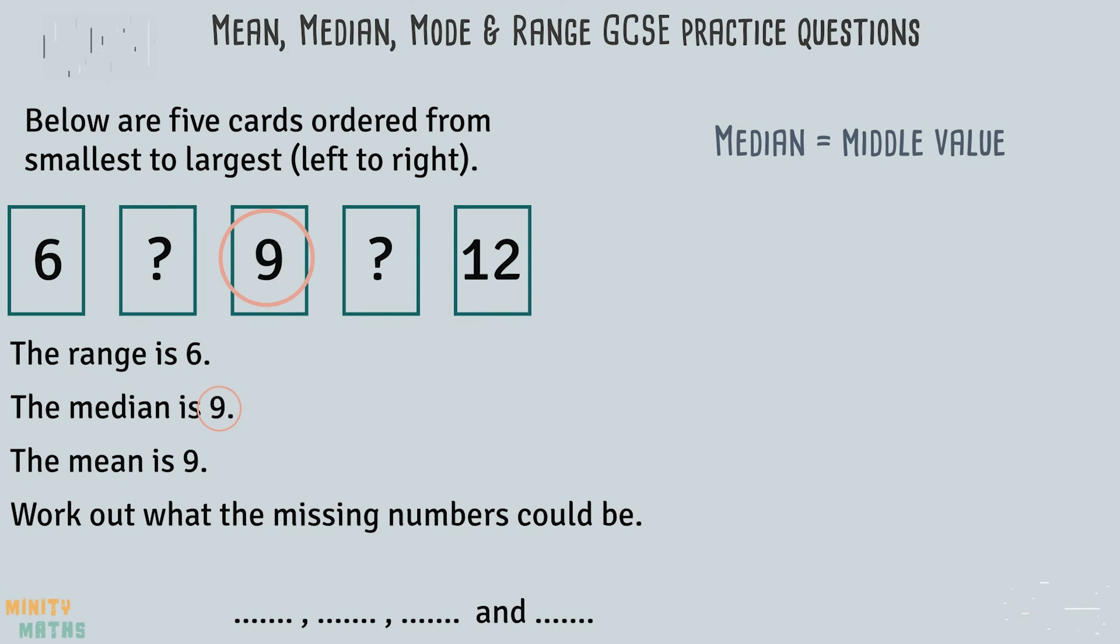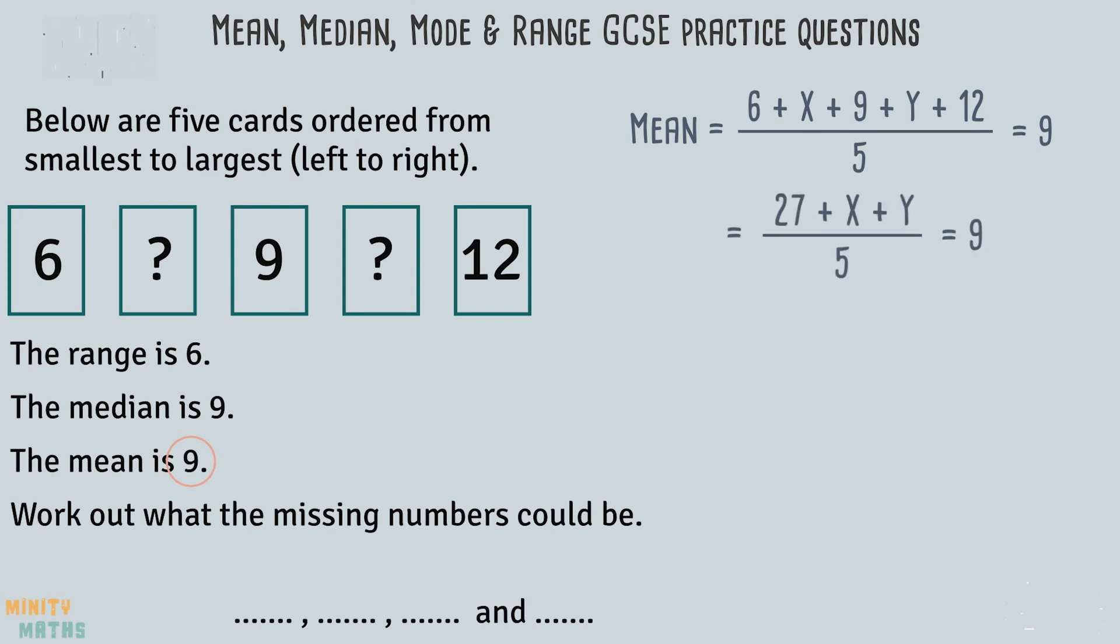We are now left with only two unknown values. Finally, we are told that the mean of the five cards is 9. Let's write this out using the formula for finding the mean. We can use the letters x and y to represent the two unknown values. Let's simplify and then rearrange this equation so we can work backwards to find the missing numbers. We can simplify this equation by adding up the numbers we already know, 6, 9 and 12. This gives us 27.